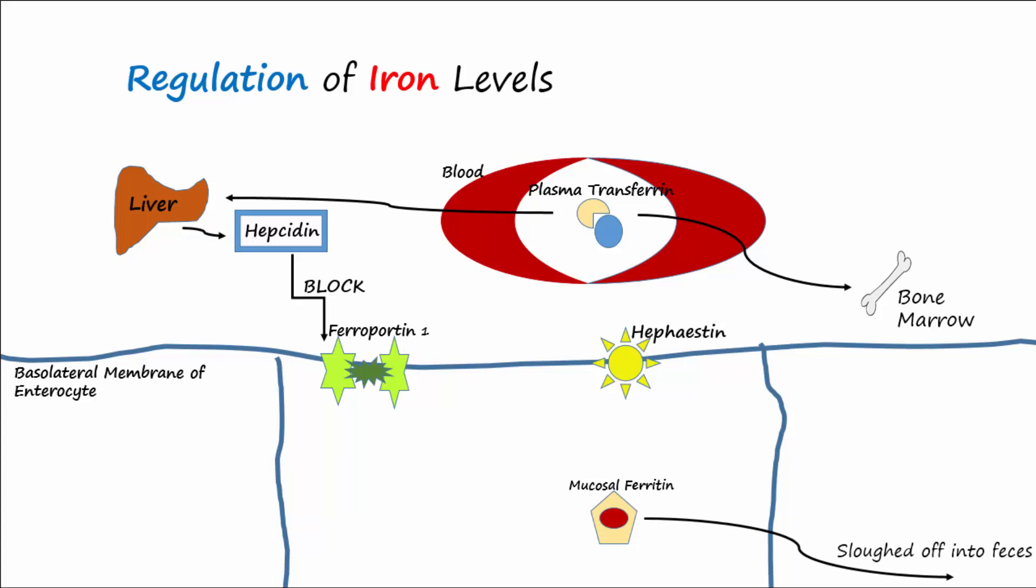When erythropoiesis is high and iron levels are low, hepcidin levels will drop so that ferroportin-1 levels will increase, bringing more iron into the blood.